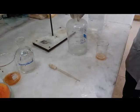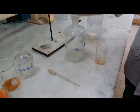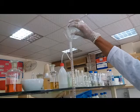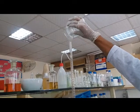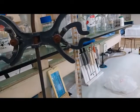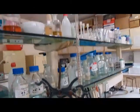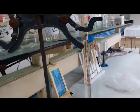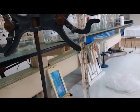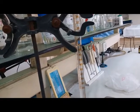Now we will take 0.1 normal NaOH in the burette. We will adjust the reading before the titration by dropping a few drops of the base. We have adjusted it.